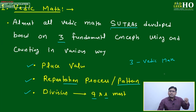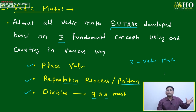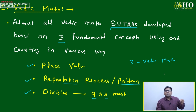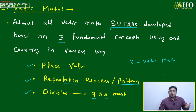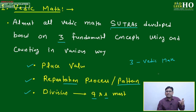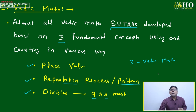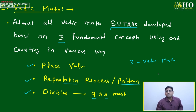These three — place value, repetition process, and division process — are the abstract foundational pillars of Vedic math, upon which the 16 sutras were developed. The original Vedic math volume explains the 16 sutras only briefly, since the plan was to write a separate full book for each sutra, which unfortunately never happened.